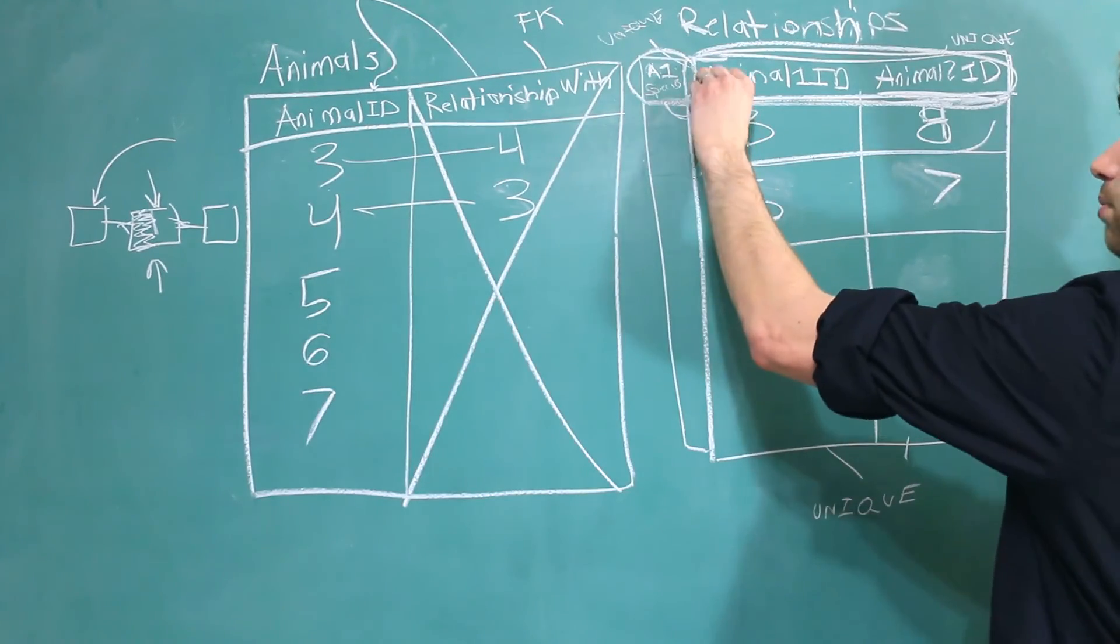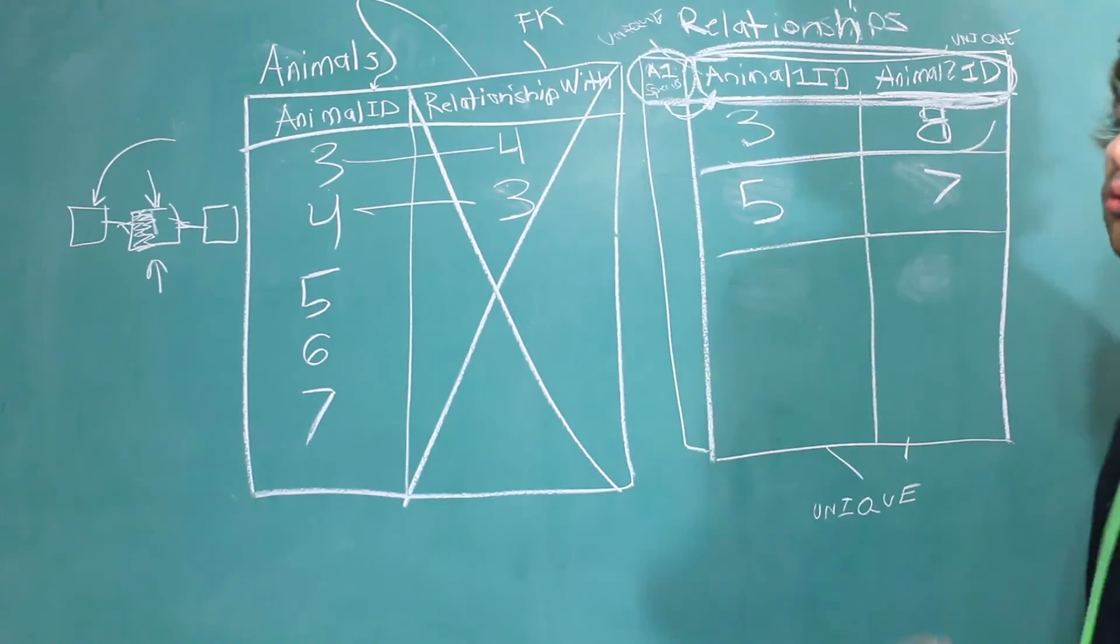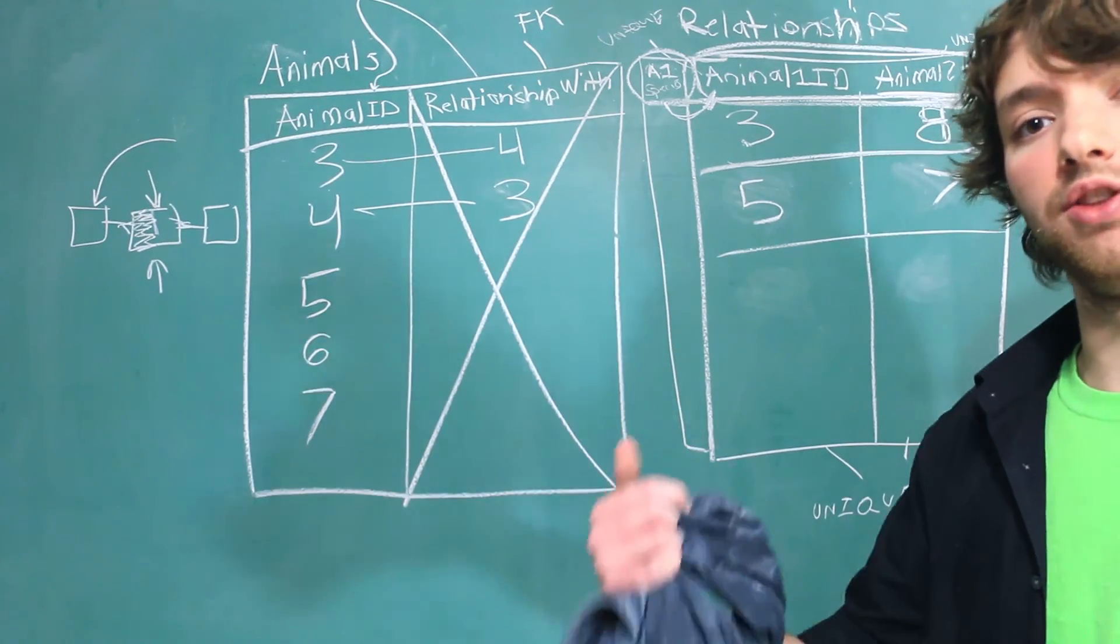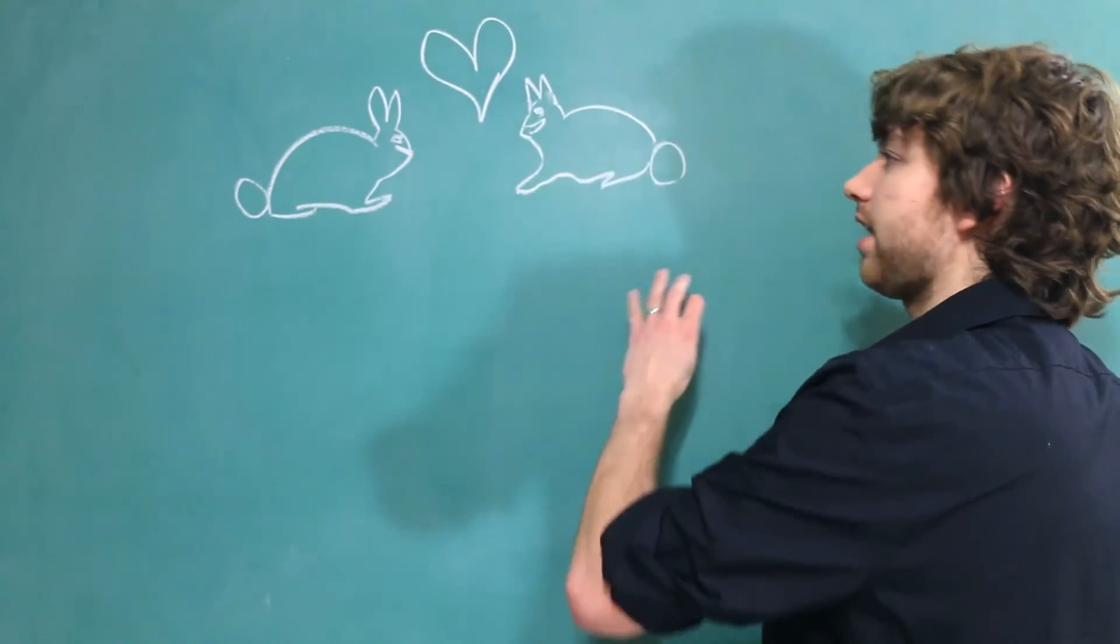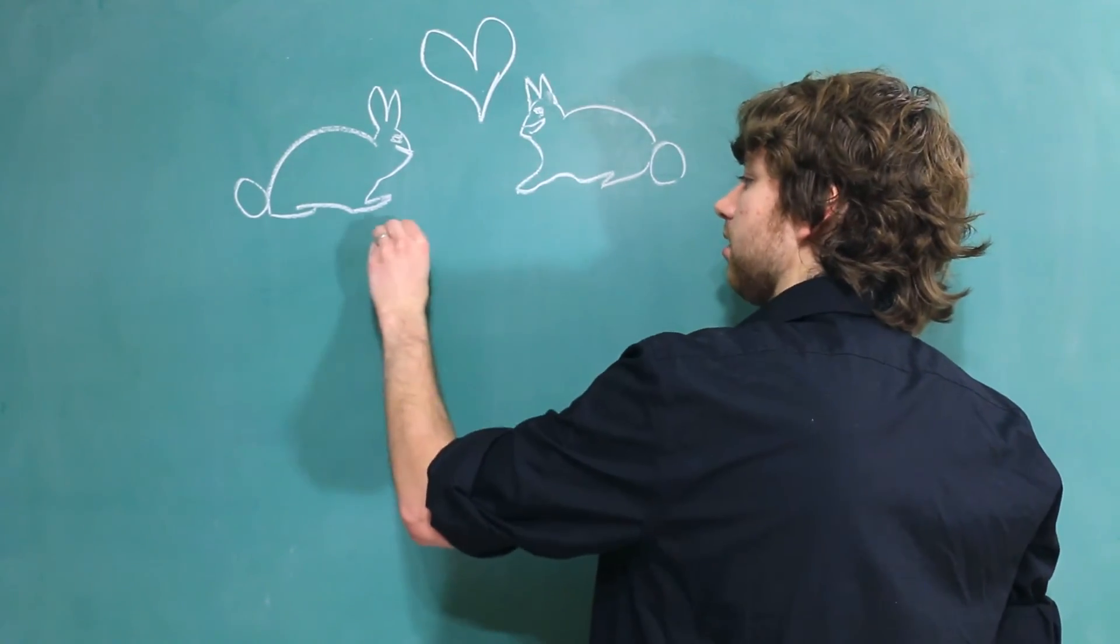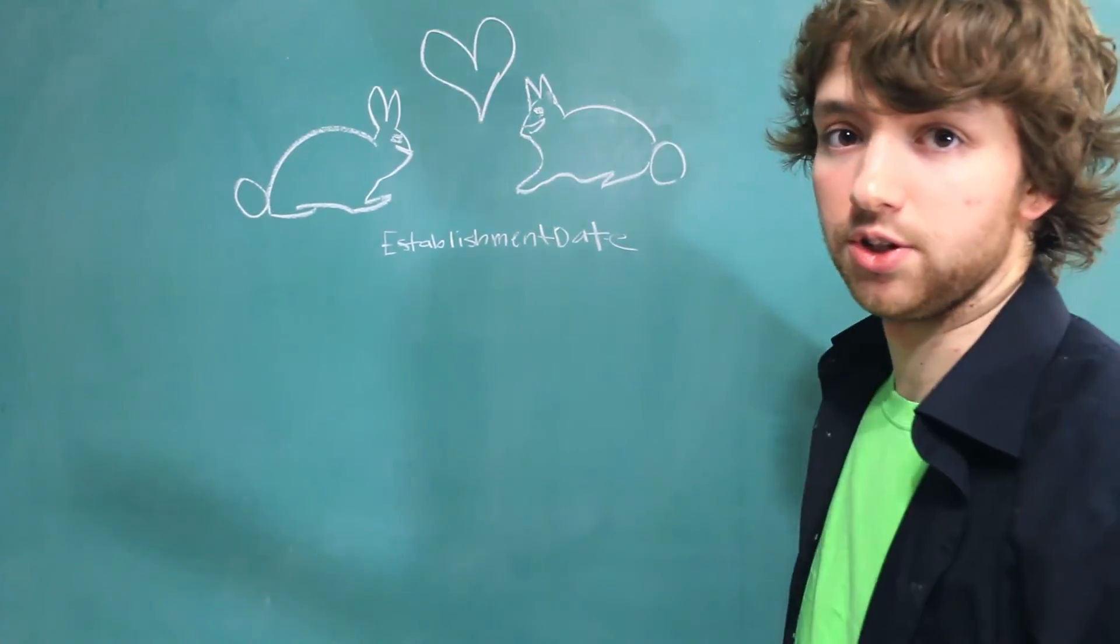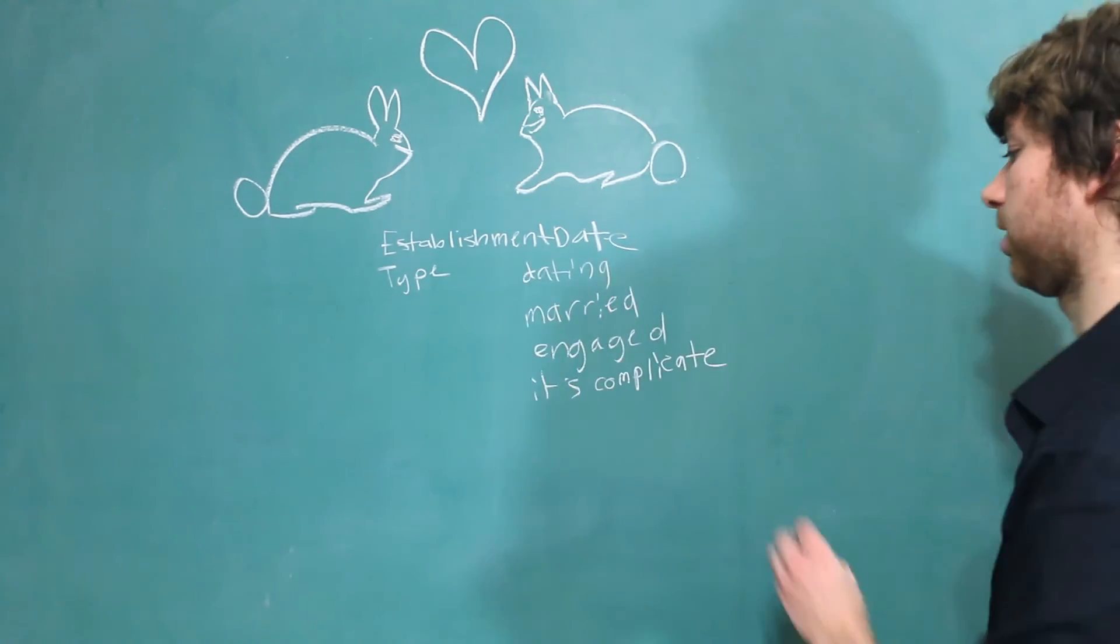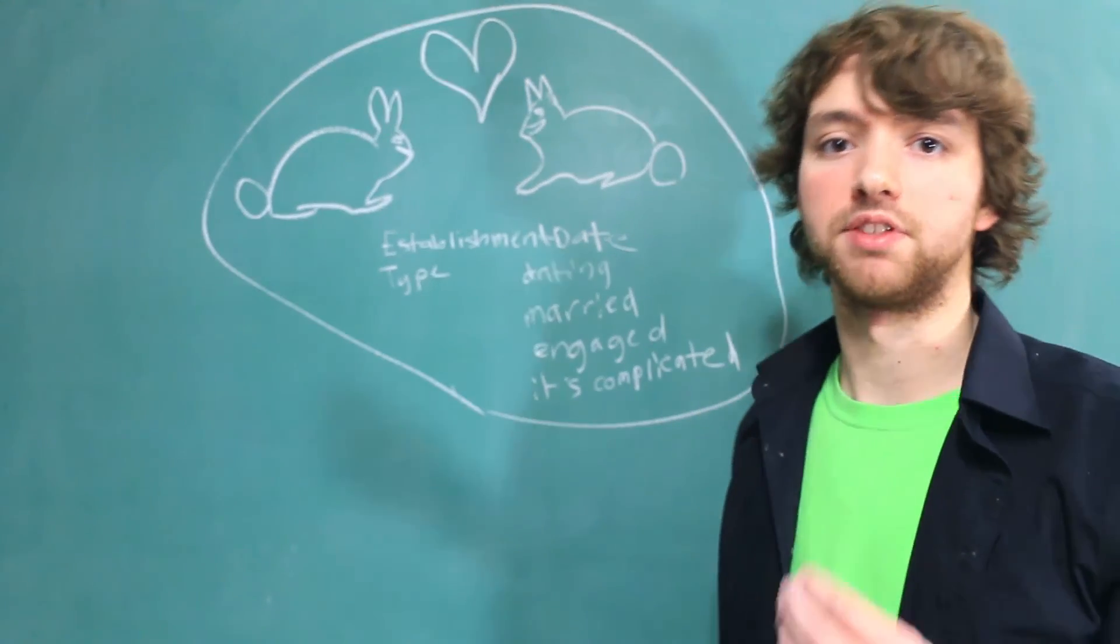Now, you might be asking yourself, if we can't store this here, what kind of information could we store in a table with a composite primary key? Any kind of data that describes the connection of the two entities. So let's say we have these two rabbits and they are in a relationship, right? Well, any data that describes this relationship could be stored in that intermediary table. For example, we could have a column establishment date. That would be the time or date of when this relationship started. We could also say type of relationship. For example, we could have dating, married, engaged, complicated, and so forth. This data all describes the relationship. So this would not be in violation of second normal form.